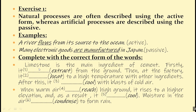Now look at this exercise. We have two paragraphs — this one and that one. They are different. First, you need to decide if each process is artificial or natural, and then you're going to decide if you'll use the active voice or passive voice. I'll give you some time to think about that, and then I'm going to show you the correct answers.